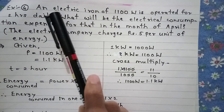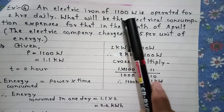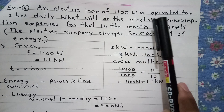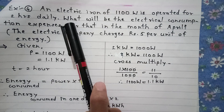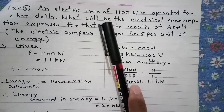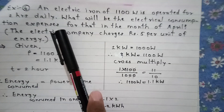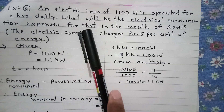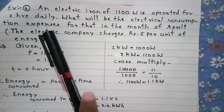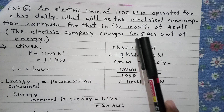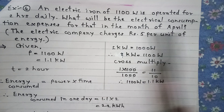The fourth example: an electric iron of 1100 Watt is operated for 2 hours daily. What will be the electrical consumption expenses for that in the month of April? The electric company charges Rs 5 per unit of energy.